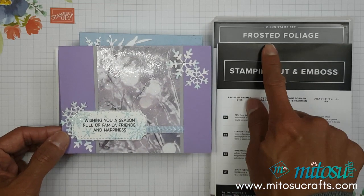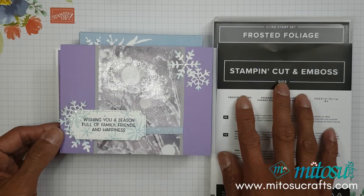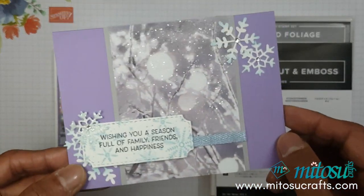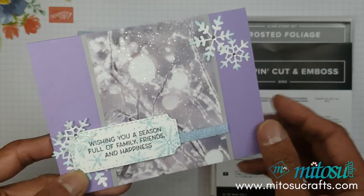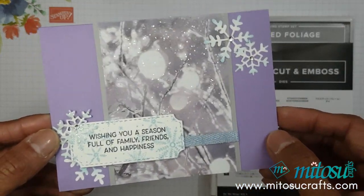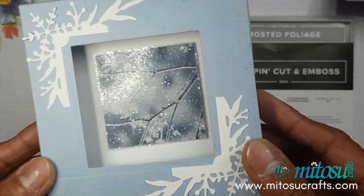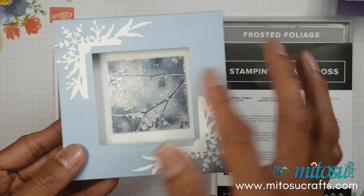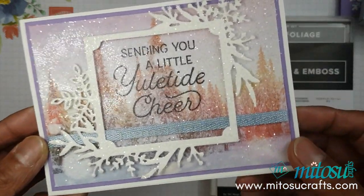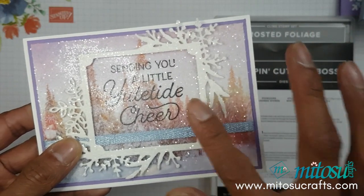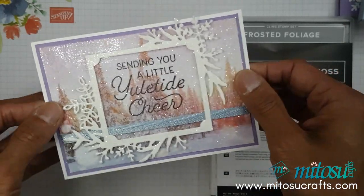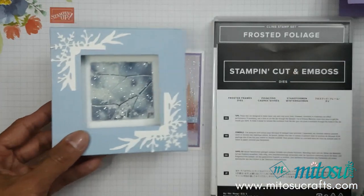I'm showcasing the Frosted Foliage and Frosted Frames bundle from the upcoming holiday autumn winter catalog, as well as the Feels Like Frost DSP, using the ice technique. You might have seen these projects on our Facebook or YouTube live. This one I did as a sample, and this one we did on the live. It's really glittery and shimmery, so pretty in person. This was Barry's amazing card with the double ice technique on the frame and the DSP—it's amazing to look at in real life.